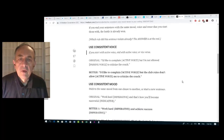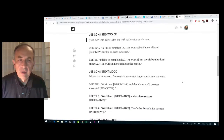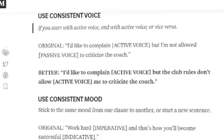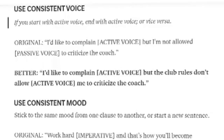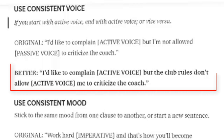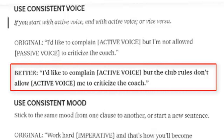Here are some examples. Using consistent voice: if you start with active voice, end with active voice, or vice versa — very simple. Here's a sentence that violates this principle: 'I'd like to complain' — active voice — 'but I'm not allowed to criticize the coach' — passive voice. Much better: 'I'd like to complain, but the club rules don't allow me to criticize the coach.' Both are in active voice.